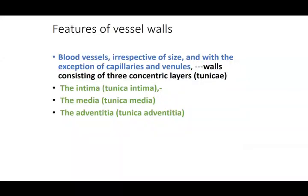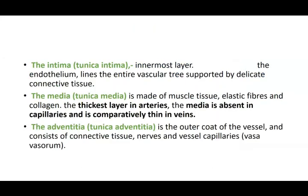Irrespective of size, blood vessel walls — except capillaries and venules — consist of three concentric layers: tunica intima, tunica media, and tunica adventitia. Capillaries have only the single tunica intima layer. The intima is endothelium lining the vascular tree, supported by connective tissue. The media is muscle tissue and elastic fibers. The adventitia is the outer coat of connective tissue, nerves, and vessels called vasa vasorum.